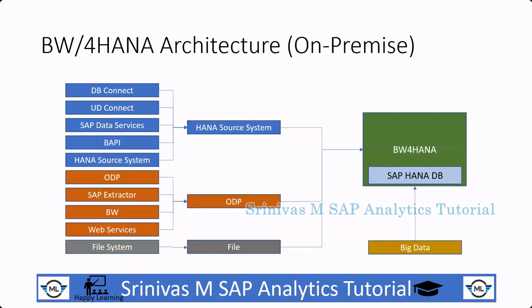BW4HANA architecture: this BW4HANA system was a successor to SAP BW on HANA, and BW4HANA works on HANA database only. SAP completely removed the traditional BW objects like DSO, multi-provider, and info set, and replaced them with HANA-based objects like ADSO and composite provider.